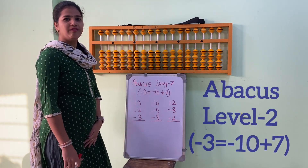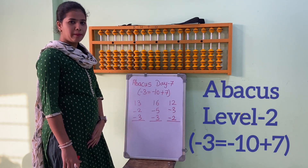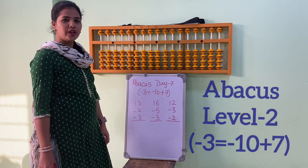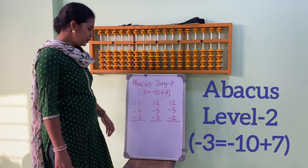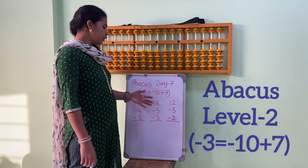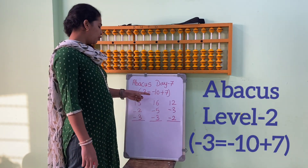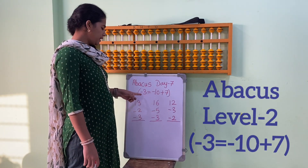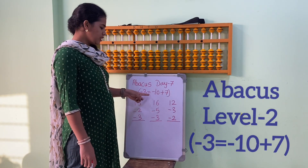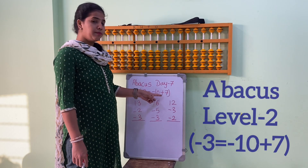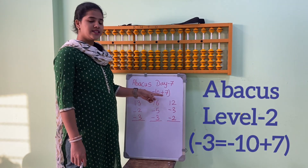Hello everyone, welcome back to our abattles channel. Today we are going to learn new sums with a new formula, that is minus 3 is equal to minus 10 plus 7.